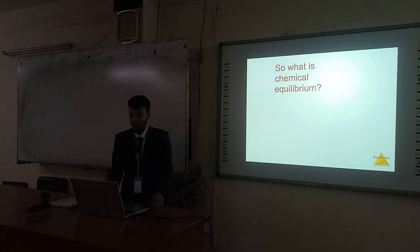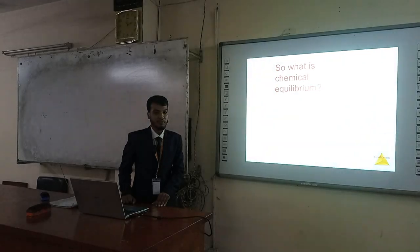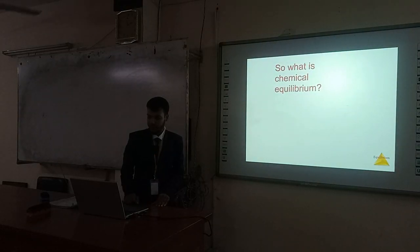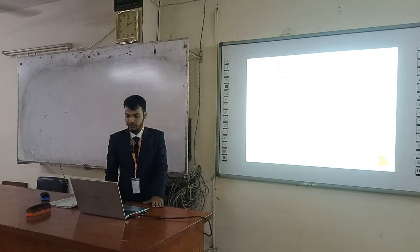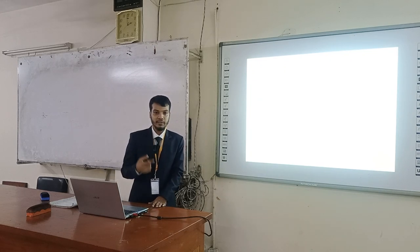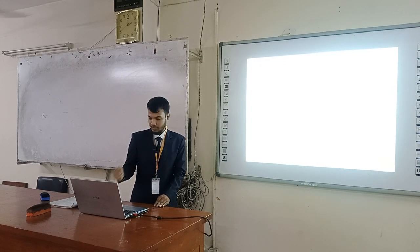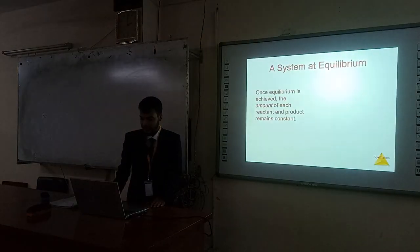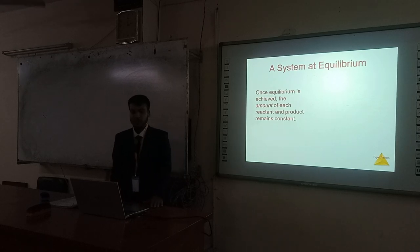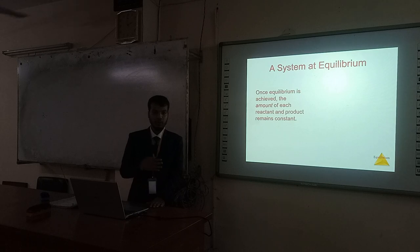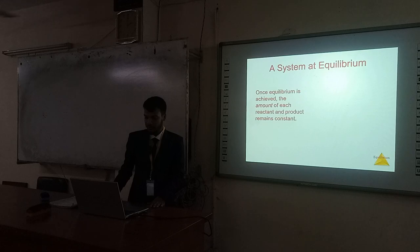So what is chemical equilibrium? Chemical equilibrium is a dynamic state where the forward reaction and backward reaction rate is the same, and where the concentration of the reactant and the product is the same. Once equilibrium is active, the amount of reactants and products remains constant. If we add or remove a product, it will automatically maintain its equilibrium condition.